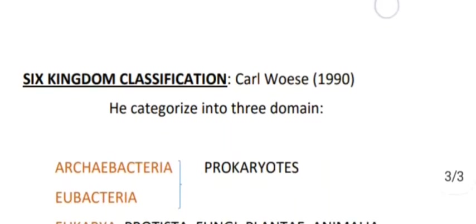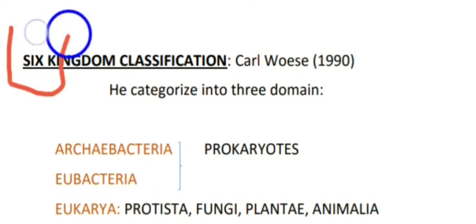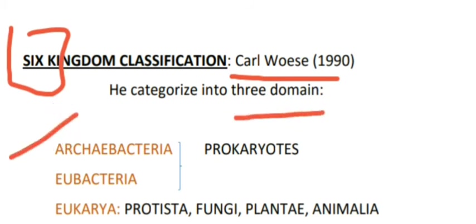Then, beyond five kingdoms, there was a sixth kingdom classification. Carl Woese in 1990 proposed three domains: Archaea (Archaebacteria), Eubacteria, and Eukarya.